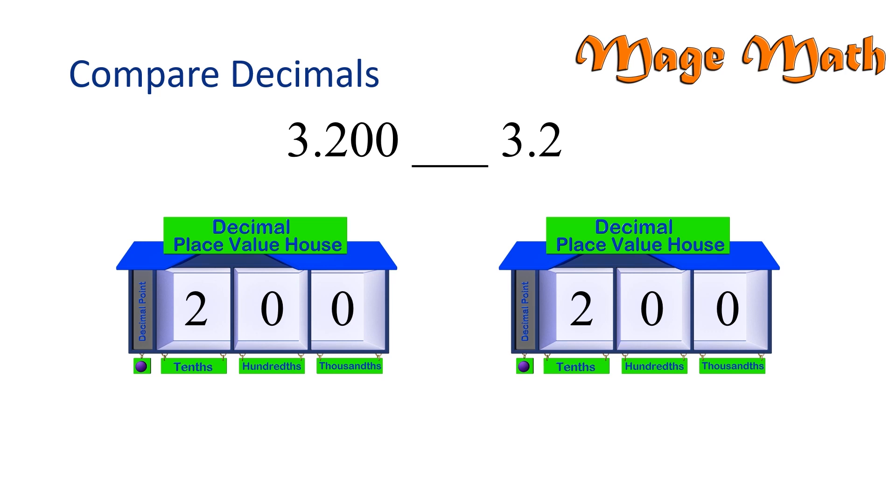That's right, they're the same, or equal. That means 3 and 200 thousandths is equal to 3 and 2 tenths. Great job!